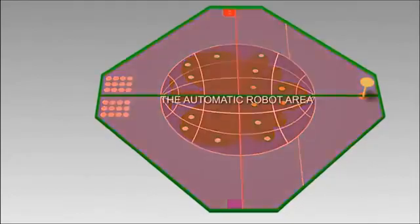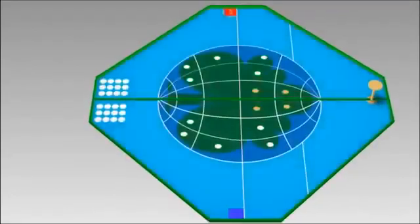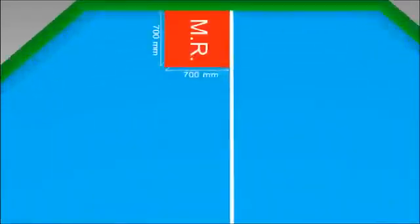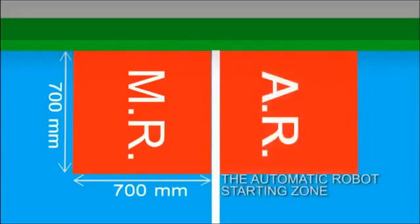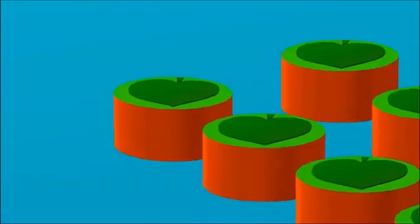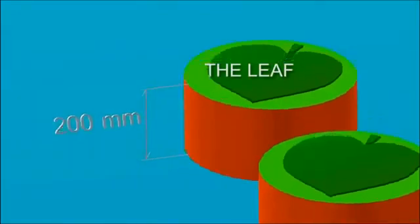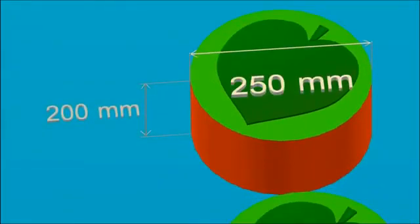The automatic robot area is the Earth zone and the surrounding area. There are two automatic robot starting zones next to manual robot starting zone. Leaves are in the shape of a cylinder, 200 millimeters in height, 250 millimeters in diameter.